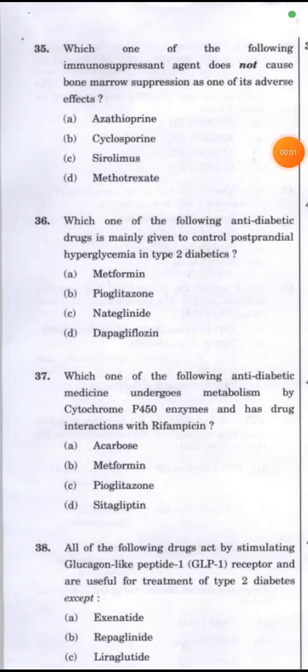Welcome back to PharmaPSA exam. Today I am continuing the UPSA drug inspector examination series. Today's question 36 is: which one of the following anti-diabetic drugs is mainly given to control post-prandial hyperglycemia in type 2 diabetics?